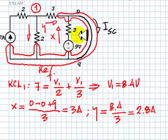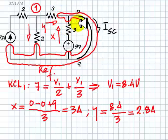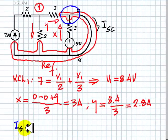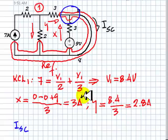If we apply a KCL equation at the Gauss surface surrounding this part of the circuit, we can find I short circuit. X plus Y is I short circuit. I short circuit is 3 amps plus 2.8, in this case, is 5.8 amps.